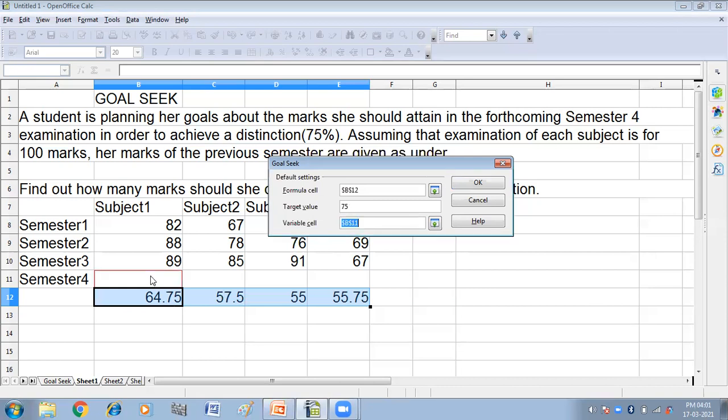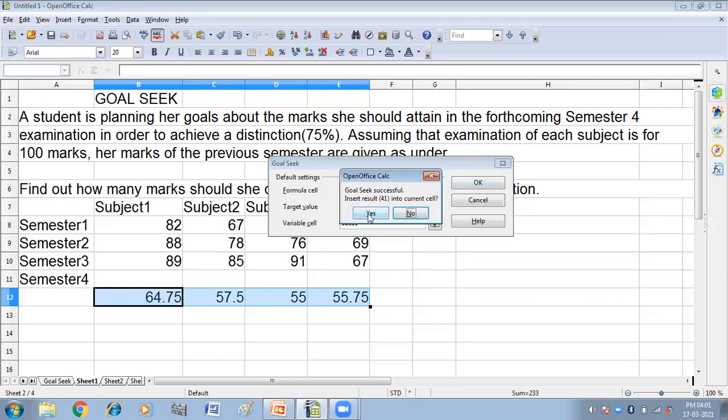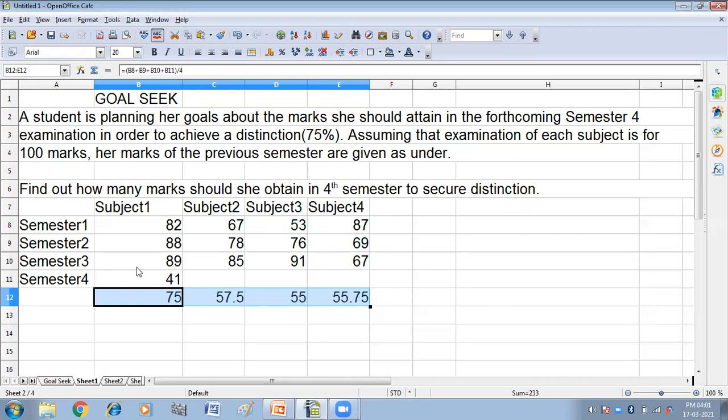So, here we don't have the semester 4, so I have entered this here and then click on OK. Yes. Now you can see in semester 4 I have got 41 marks and I have got 75 marks in my target cell.